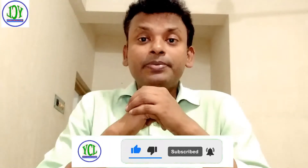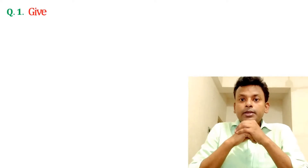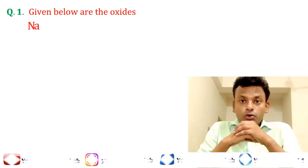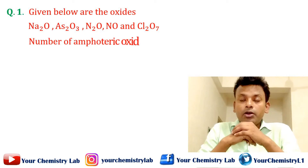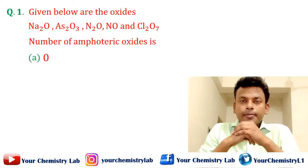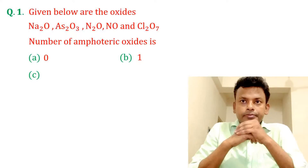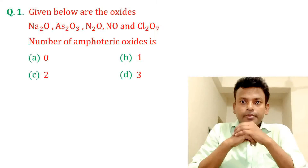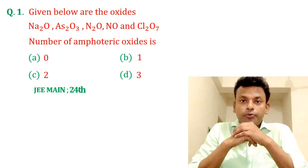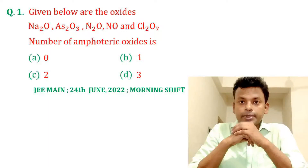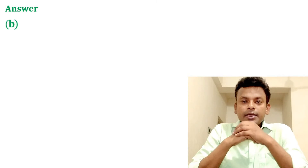Now, watching the whiteboard. Question number 1: Given below are the oxides Na₂O, As₂O₃, N₂O, NO, and Cl₂O₇. The number of amphoteric oxides is — option A, option B, option C, and option D. This question was set in JEE Main 24th June 2022 morning shift. Answer: option B is the correct answer.